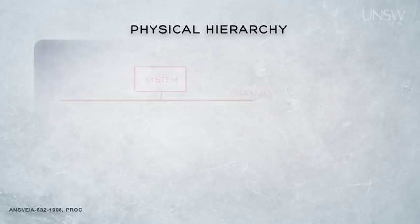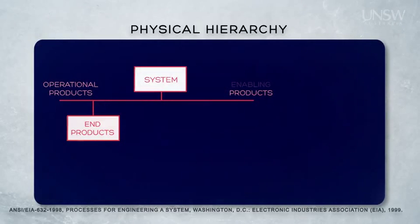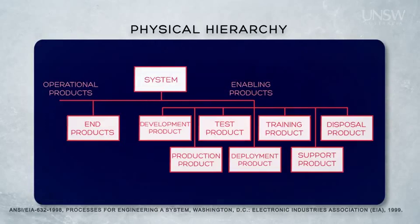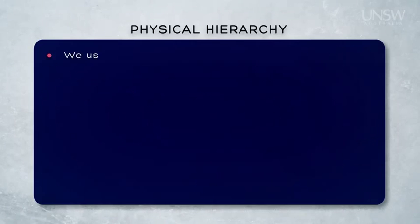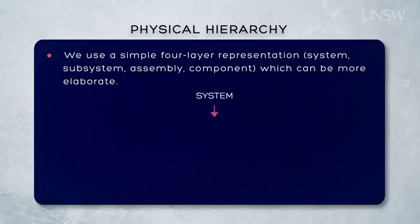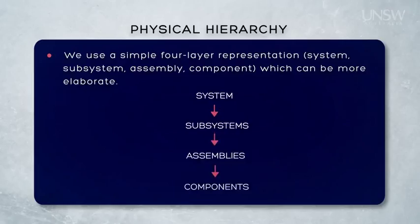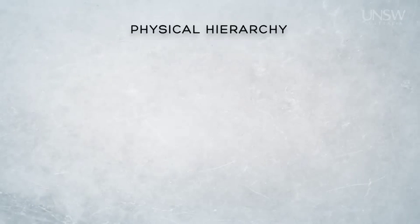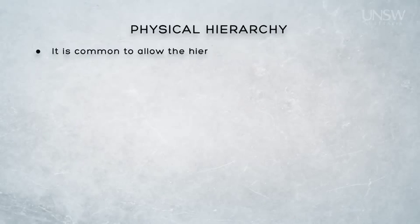In a physical sense, a system can be considered to comprise operational or end products and enabling products. The end products of the system are also normally described in a hierarchy. Here we use a simple four-layer hierarchy: the top-level thing is the system, and it comprises subsystems, each of which comprise a number of assemblies, each of which comprise a number of components — forming a physical hierarchy of the system. There are other terms in use, but these are probably the most common, and their application depends very much on the context and where within the overall project the system is being considered.